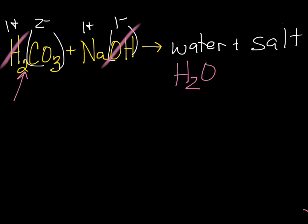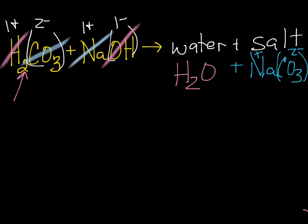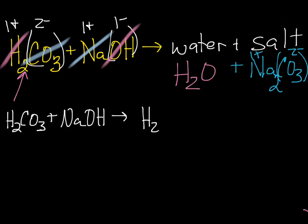Now we need to make our salt, which is made up of the cation and anions that are left over — the Na from the base and the CO3 from the acid. We write Na first because it's got a plus charge — it's the cation. Then we write CO3, which has a 2− charge. To make these neutral, it's going to have to be Na2CO3. So we have H2CO3 for our acid plus NaOH for our base, producing water H2O and our salt Na2CO3.